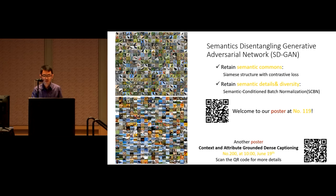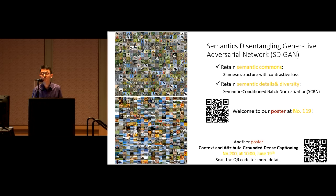Our semantic disentangling generative adversarial network retains both semantic content with the siamese structure and semantic details with the proposed SCBN. The poster will be held at number 119. Our other work on dense captioning will be introduced as a poster tomorrow. Thank you for your attention.